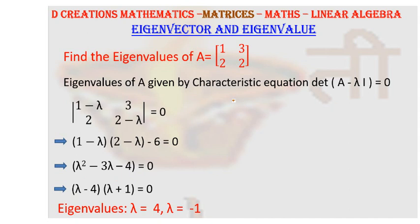Alright, so finally what we have got is lambda minus 4 into lambda plus 1 is equal to 0. So this gives us two roots, namely plus 4 and minus 1, and they are the values of lambda.